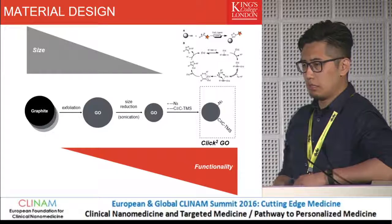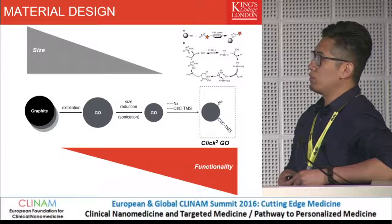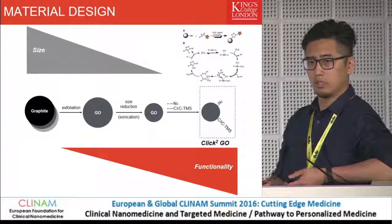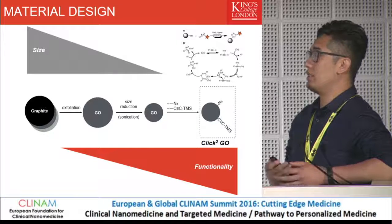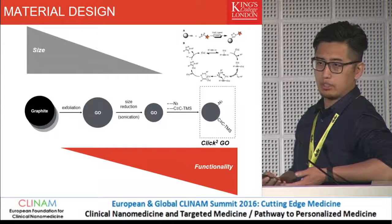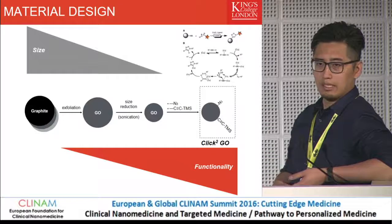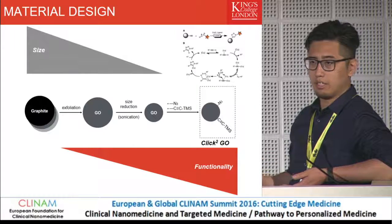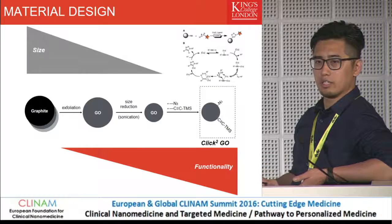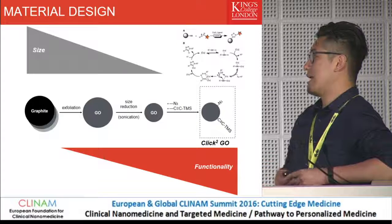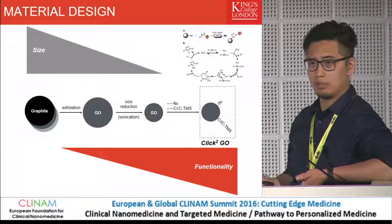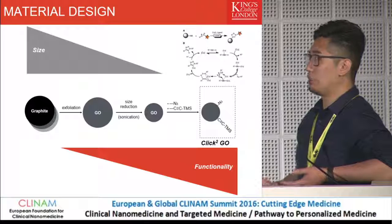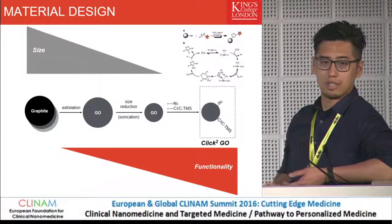This is the material design. As we heard from Sandra, size is important, so we want to synthesize the graphene, hopefully at large scale, because as mentioned, yield is always a problem when synthesizing these materials. Later on, we want to introduce the azide and alkyne, so you can do two copper-catalyzed azide-alkyne cycloadditions — that's what we call the click-to-graphene oxide. The alkyne can also do thiol-alkyne coupling reactions, so it's actually a triple-click system. But today we only talk about the double-click graphene oxide. Hopefully we can reduce the size and enhance the functionality using click chemistry.